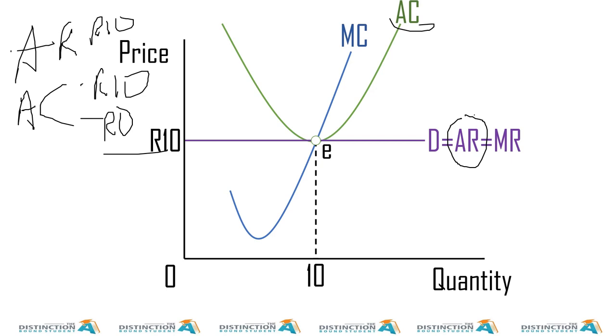And should this firm continue the answer is yes they can continue because well first and foremost they are making a profit which is normal and secondly because this firm can cover its variable costs because we know that AVC is somewhere below the AC it's always below the AC.